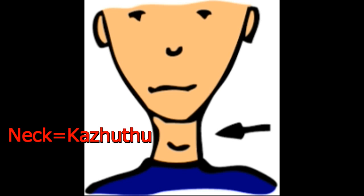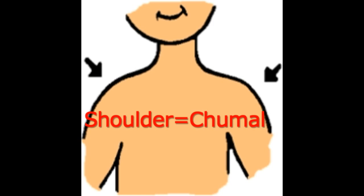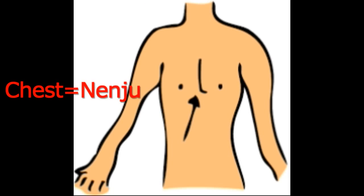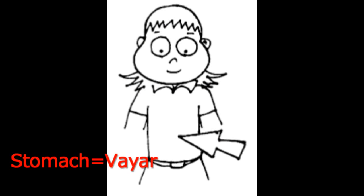Shoulder is Chumal — the last letter is L. Chest is Nenju. Stomach is Wier — the last letter is R, Wier.